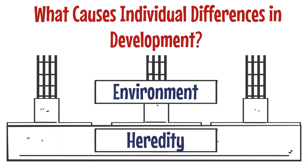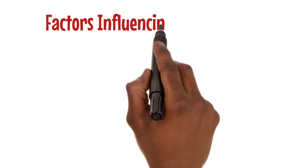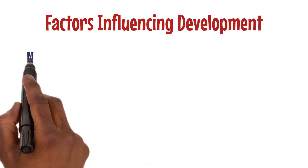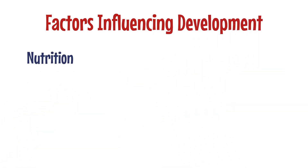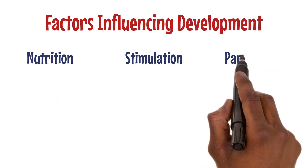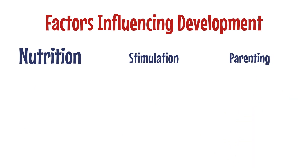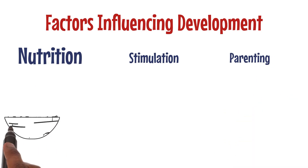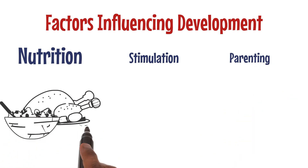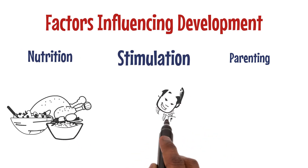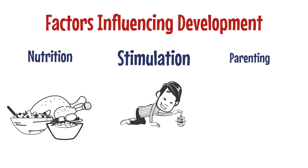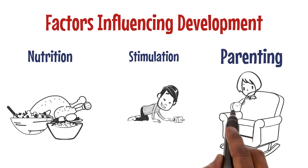Now let's talk about factors influencing development. Nutrition, early stimulation, and parenting all have a profound impact. Nutrition is crucial — a balanced diet supports healthy growth and development. Early stimulation, like talking to babies and showing them pictures, fosters their physical and mental development.